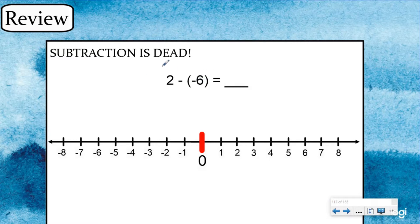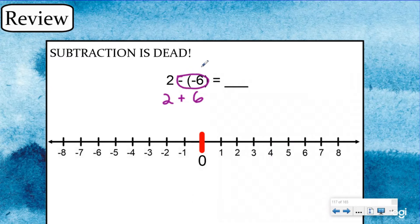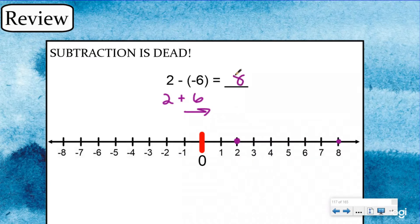Since we can't subtract anymore, we want to rewrite this using its additive inverse. We're still going to start at two, but we're going to get rid of the subtraction sign and add the opposite. The opposite of negative six is positive six, so instead of two minus negative six, we're actually going to do two plus six. This also goes along with an earlier lesson about the opposite of an opposite. Some people say two negatives make a positive — we'll get to that later, but we want you to understand what's happening on the number line. So starting at two, we rewrite using the additive inverse and move to the right six places, ending up at eight.